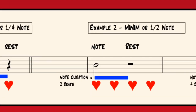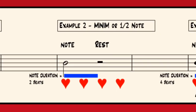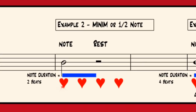Let's look at how we write a two beat note. Let's start the pulse again. Notice how this time the duration of the note is for two pulses or two beats. Traditionally this is known as a minim, or in contemporary music it's known as a half note. And it also has its own unique looking rest symbol.